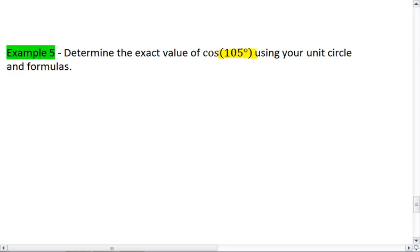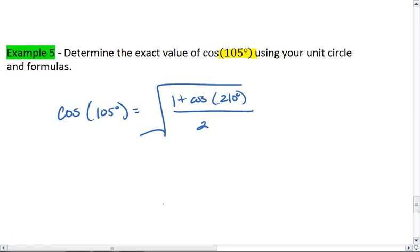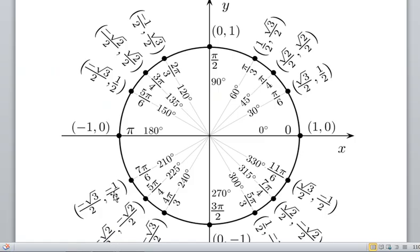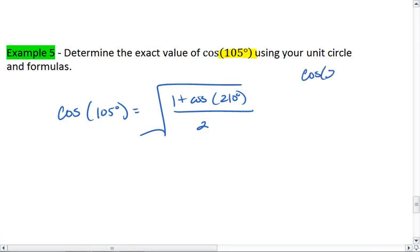So let's go back. We see that cosine of 105 degrees is going to equal root 1 plus cosine of 210 degrees all over 2. Cosine of 210 is, let's see, negative root 3 over 2.